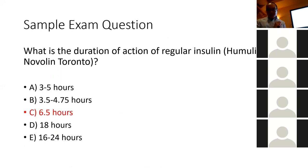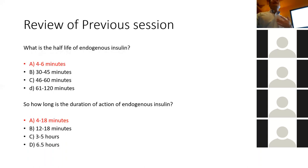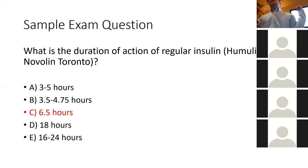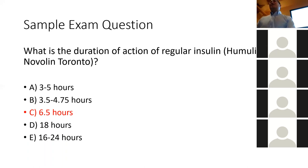Here's a question: Humulin R and Novolin Toronto have the same amino acid sequence as the insulin you're making right now, but endogenous insulin only lasts about 4 to 18 minutes while Humulin R lasts 6.5 hours. Why such a big difference if the amino acid sequence is the same? The key reason is that subcutaneous injection forms a depot under the skin, whereas your pancreas secretes insulin directly into the bloodstream. The other reason involves hexamers.